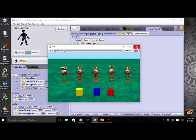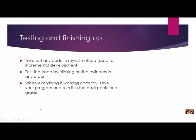Now if you're going to be a good tester, go ahead and try clicking on your cylinders in different orders — everything should work fine, and then you know you're ready to save and turn in your program. Do your testing and finishing up. We're going to do another program that's very similar for more practice, because there are a lot of new steps when working with arrays.